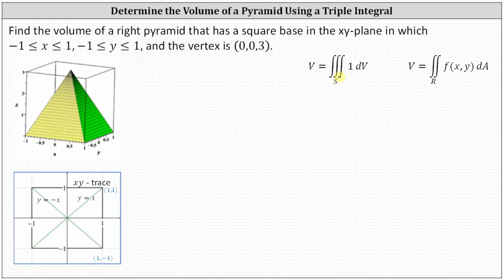Our strategy is to find the volume under one face of the pyramid and then multiply by four to determine the entire volume. We'll focus on determining the volume under this green face, considering only this region in the xy-plane. We'll find the volume under this green face and then multiply by four to determine the total volume of the pyramid.